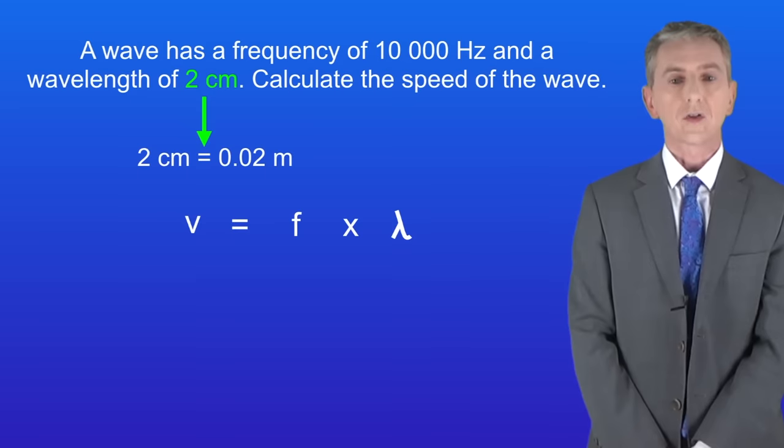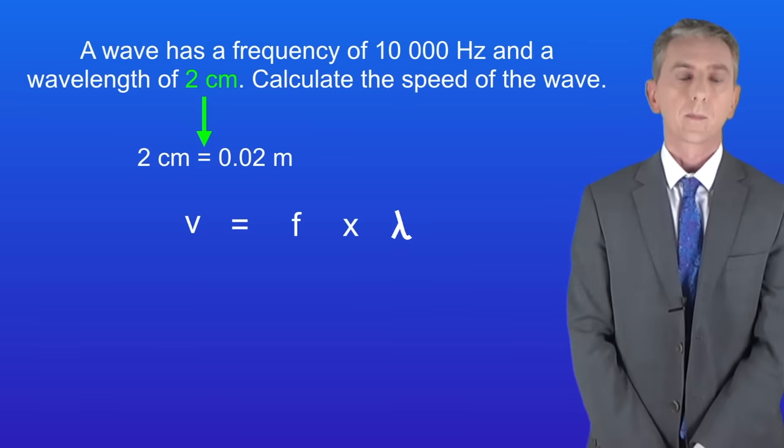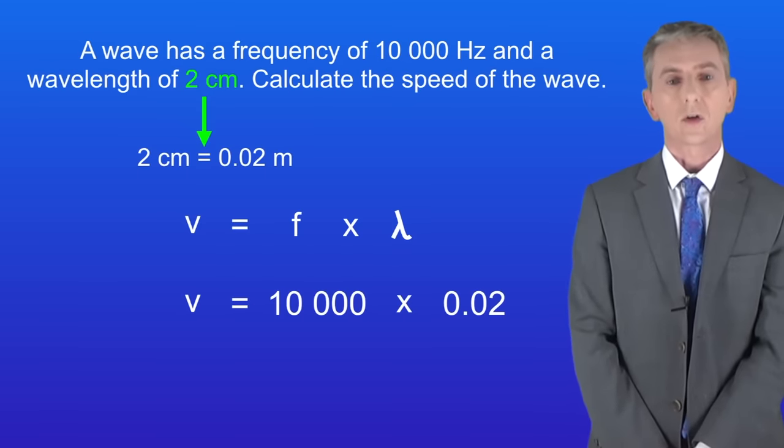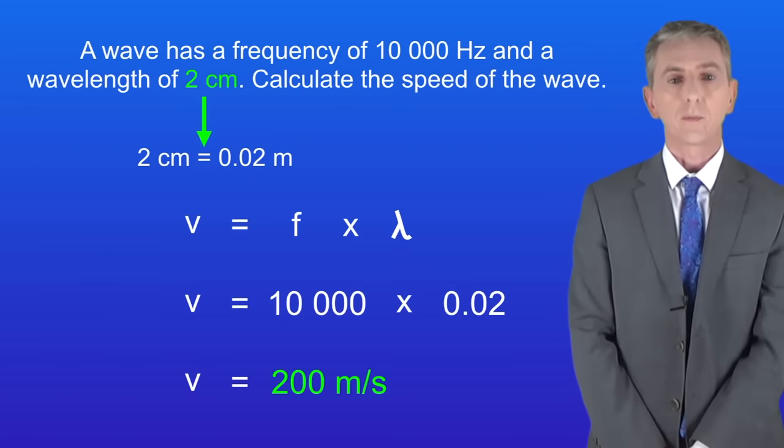Now we can use the wave equation to calculate the wave speed. The frequency is 10,000 Hertz, and the wavelength is 0.02 meters. Multiplying these together gives us a wave speed of 200 meters per second.